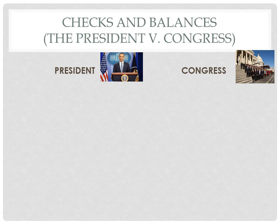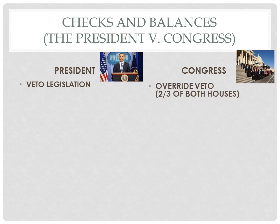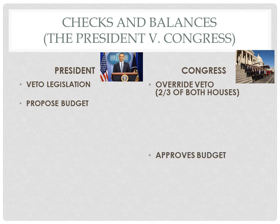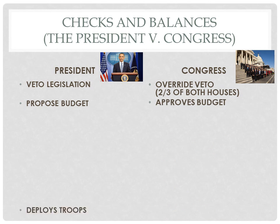Our Founding Fathers intended for a constant power struggle to take place between the executive and legislative branches as part of our system of checks and balances. For everything the president can do, Congress has an answer for it. For example, when the president vetoes legislation that Congress has passed, they still have the ability to override that veto with a two-thirds vote in both houses. The president has the chance to propose a budget, but it's Congress who has the final say, with the power of the purse, to approve that budget.